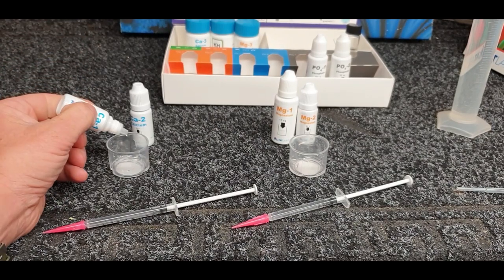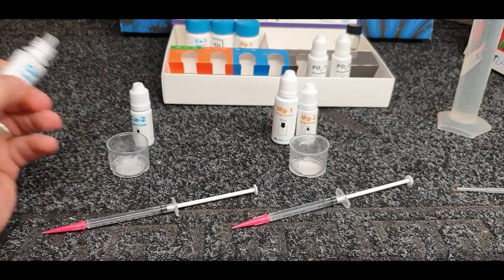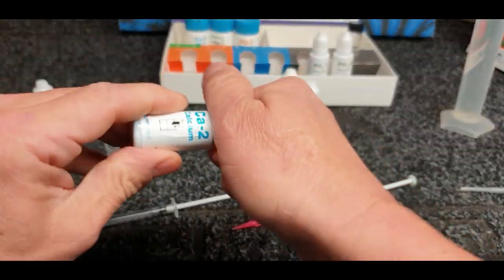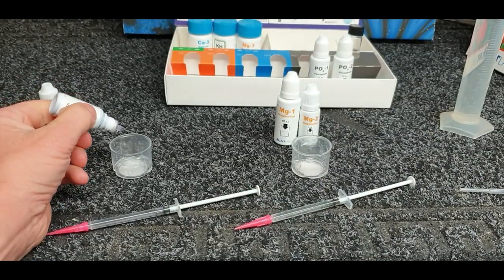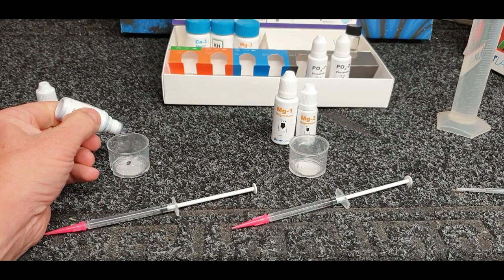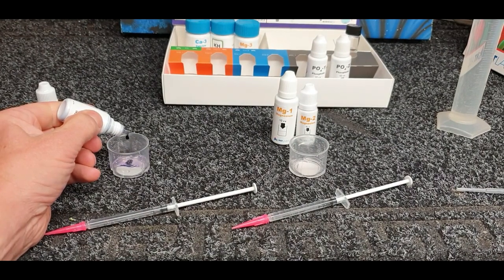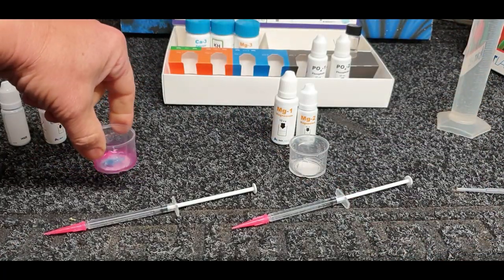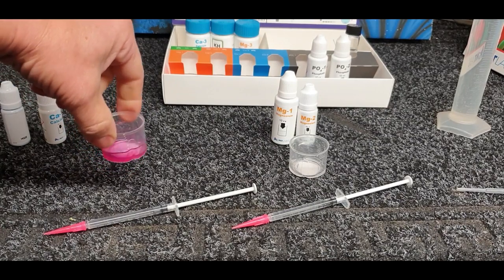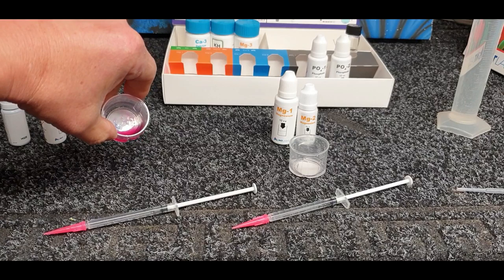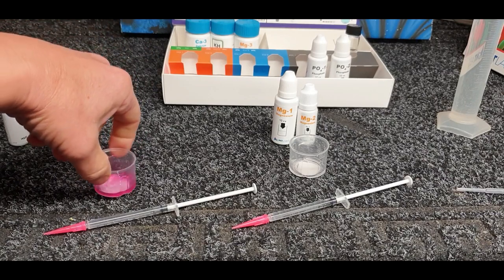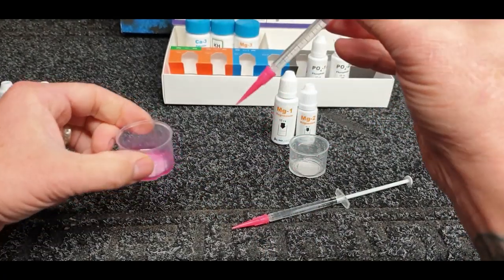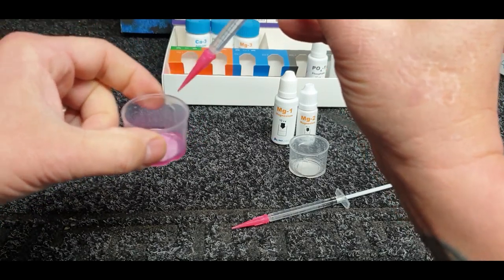The calcium test, you need 5 drops of reagent one. Five of those in there, number two, 5 drops. Five drops of that. Give that a little swirl around, making sure it's all dissolved into that water. Then again, pick up your syringe, swirl it around, it's going to go purple and you stop when it turns blue.